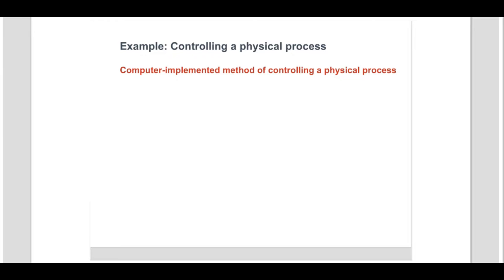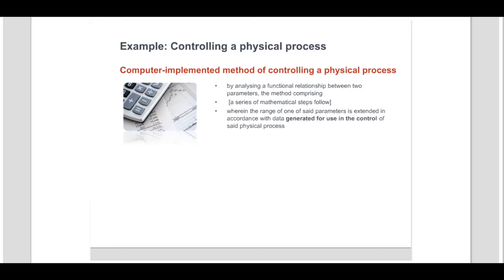In this first example, a computer-implemented method is used to control a physical process by analysing a functional relationship between two parameters. The method comprises a series of mathematical steps which are used to generate data to extend the range of one of said parameters. This range is then used in the control of the physical process. Therefore, the claim appears to be made up of clearly technical aspects as well as non-technical aspects.